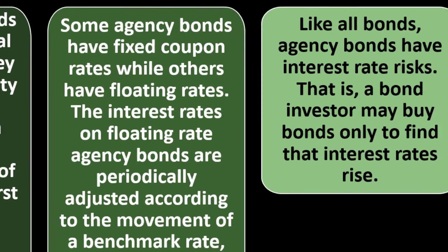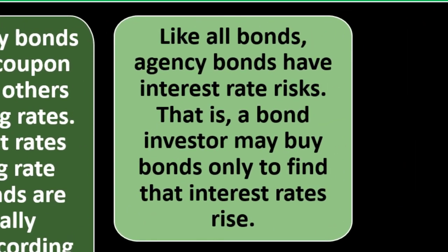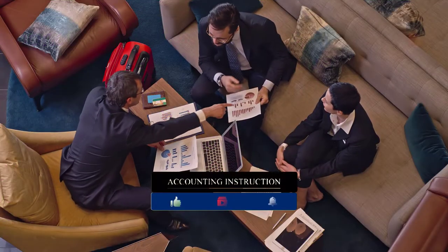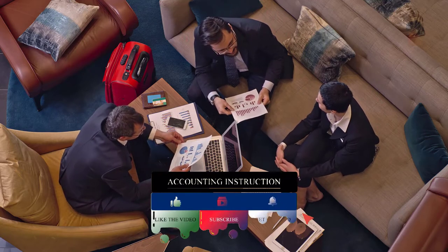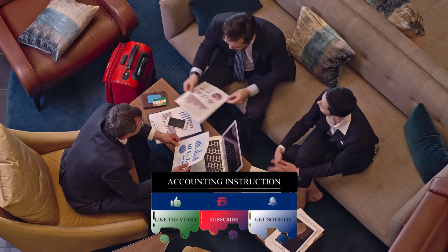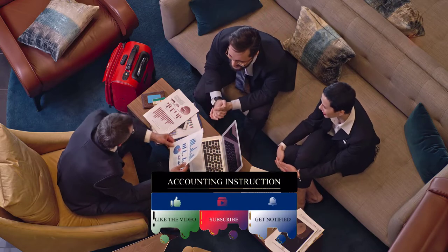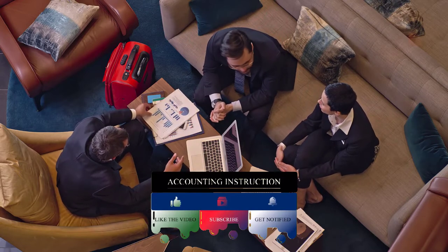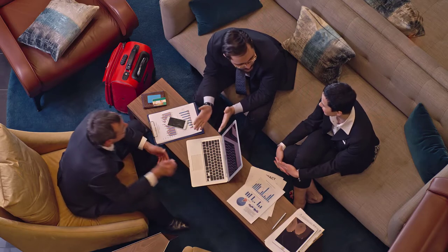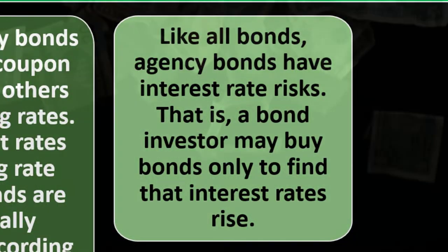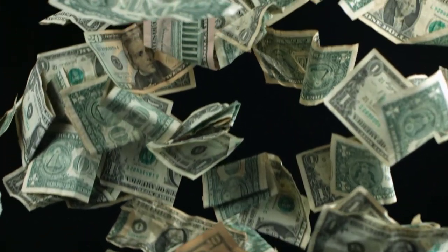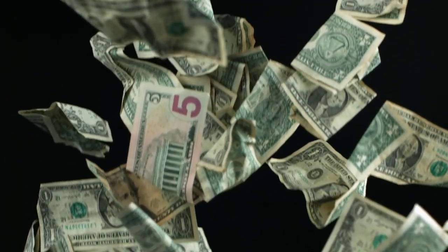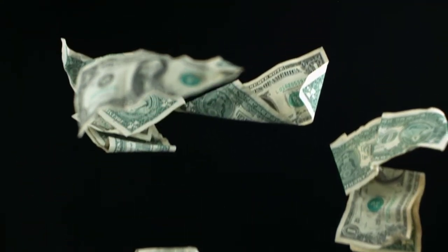The interest rates on floating-rate agency bonds are periodically adjusted according to the movement of a benchmark rate such as LIBOR. Like all bonds, agency bonds have interest rate risk. If you lock in an interest rate and inflation or market rates go up, you're getting less of a real return — you might have been able to purchase other securities at a higher rate if you had kept the cash.